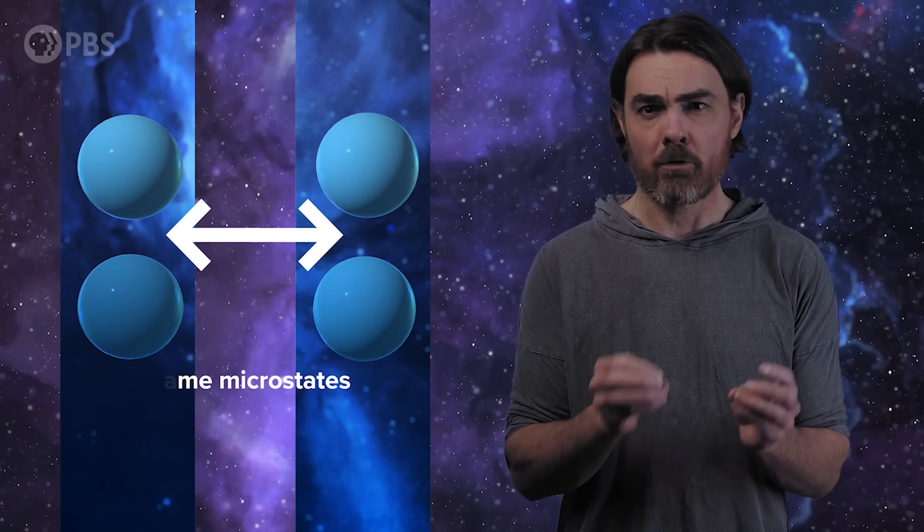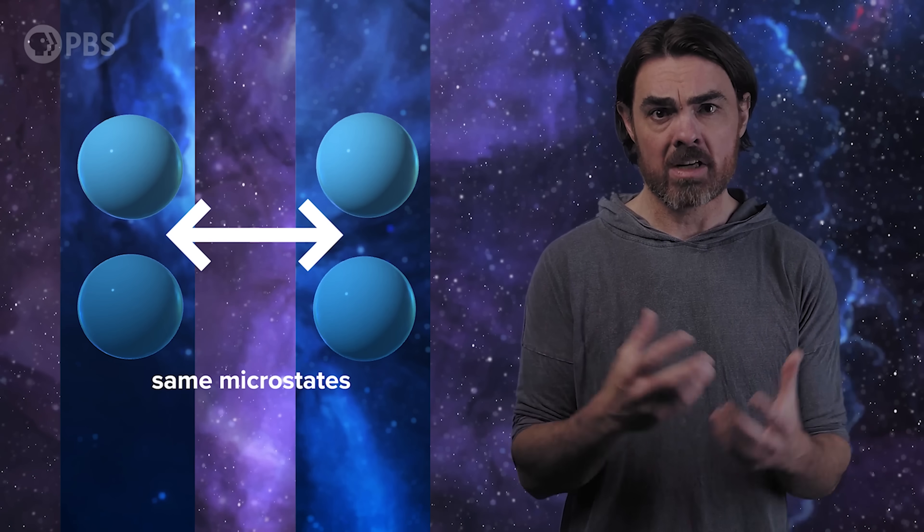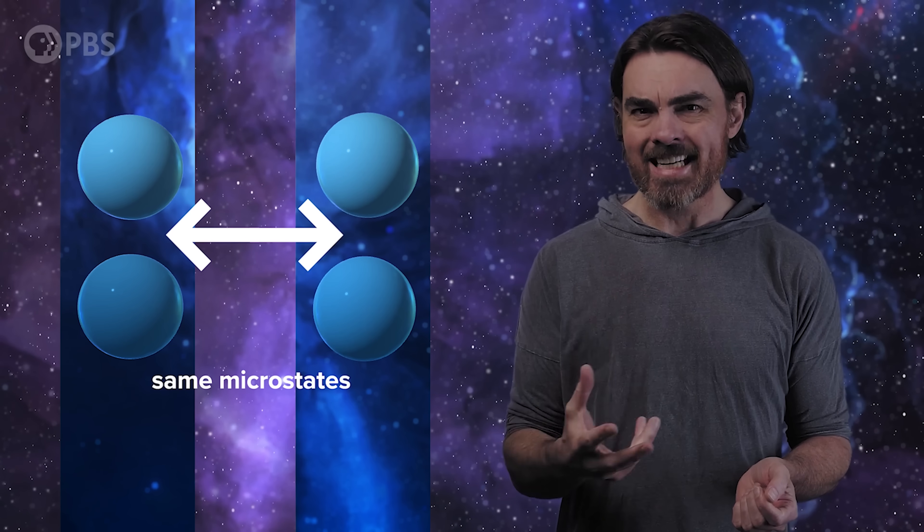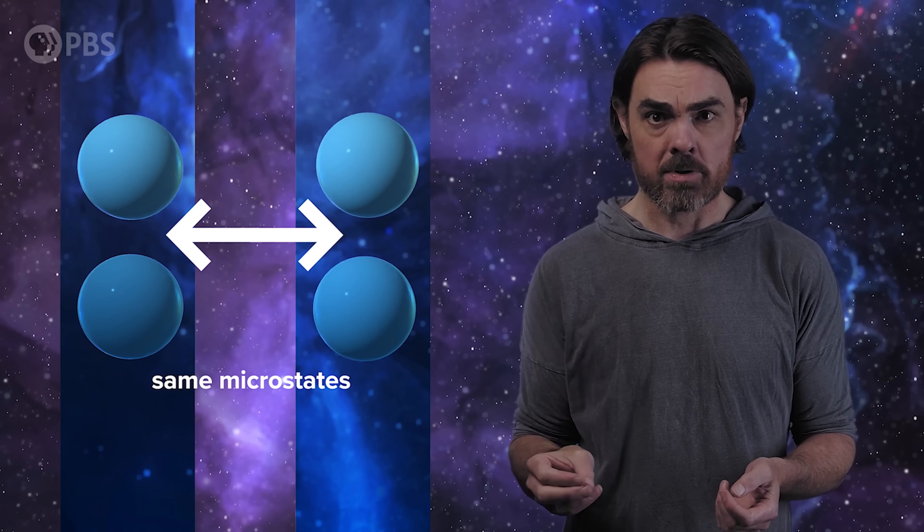I did gloss over something pretty important in all of this. When I was counting energy states, I acted like it really matters which order you put the balls into their energy bins. That's fine if the balls represent meaningfully distinct objects, but if the particles in question are truly indistinguishable from each other, then simply swapping two particles with each other shouldn't count as two different microstates. Changing the detailed spatial configuration counts, but not just mixing around the particle labels, so that means we have overcounted the states. When we count states correctly, this is the equation we get for the energy distribution.